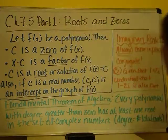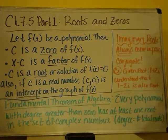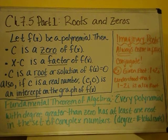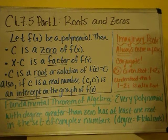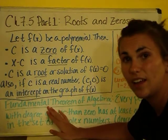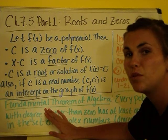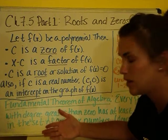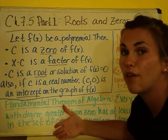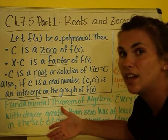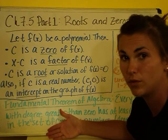Down here we have the Fundamental Theorem of Algebra, which says every polynomial with a degree greater than 0 has at least one root in the set of complex numbers. Basically, the Fundamental Theorem of Algebra says the degree of the polynomial is equal to the number of roots you're going to find. So if you have something that's degree 4, it's going to have four roots — whether those roots are real or imaginary or complex, it's for you to find out.